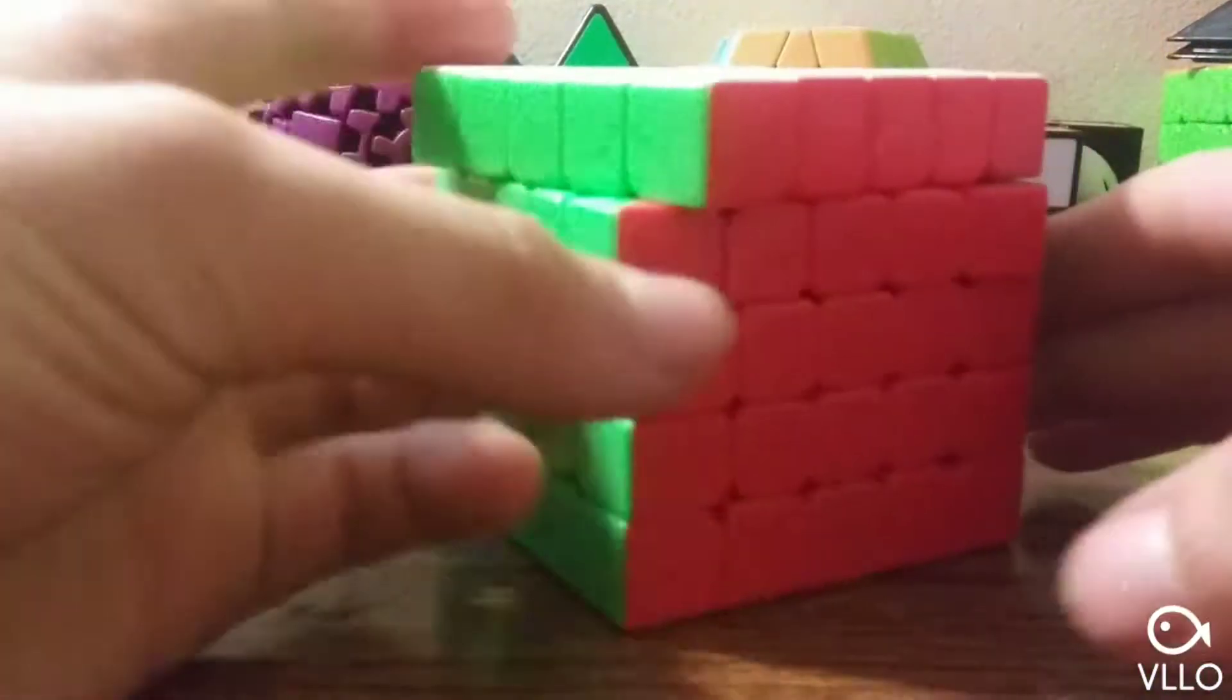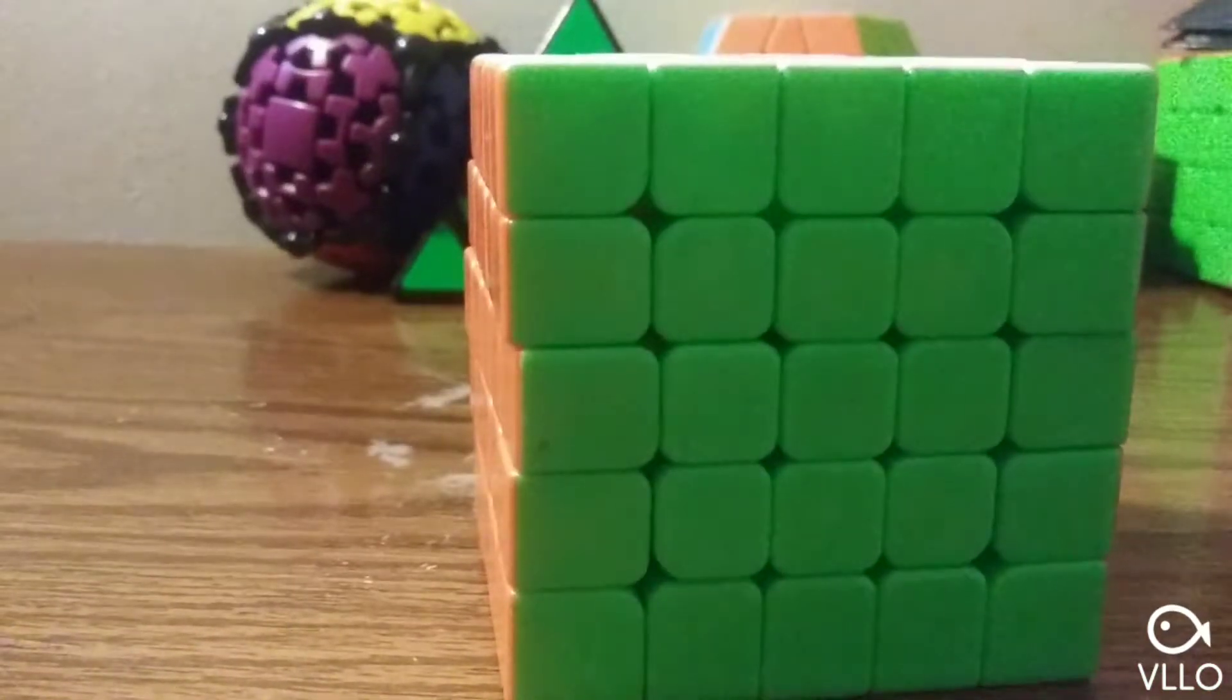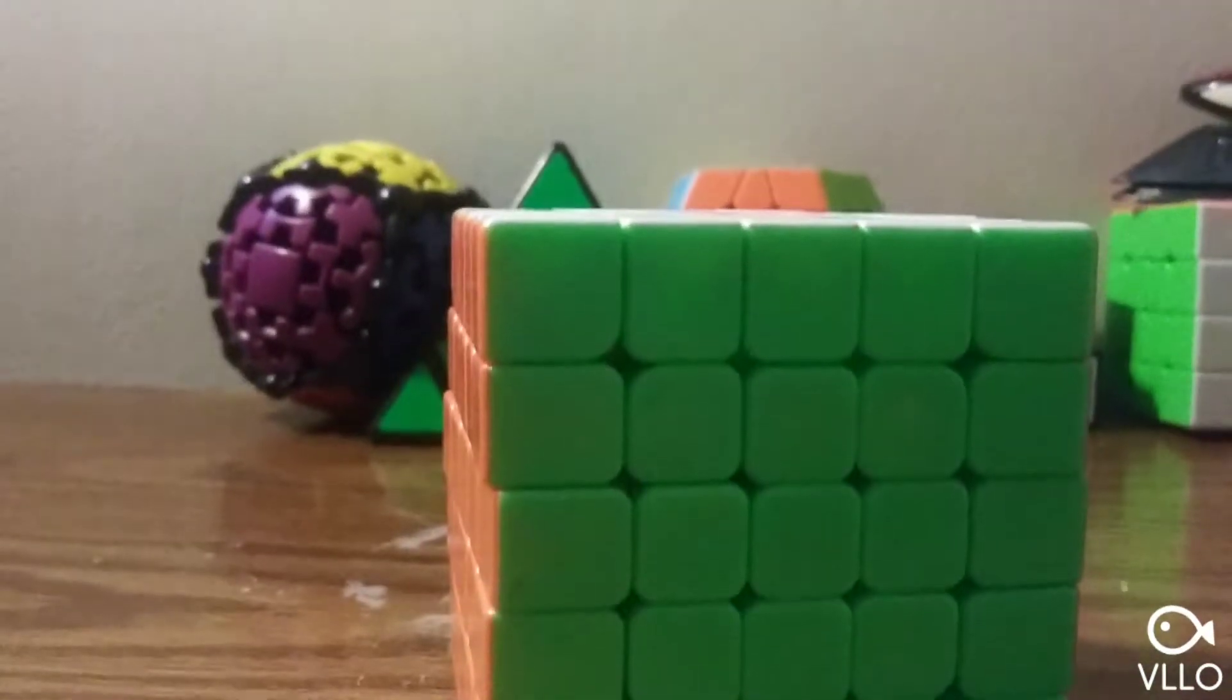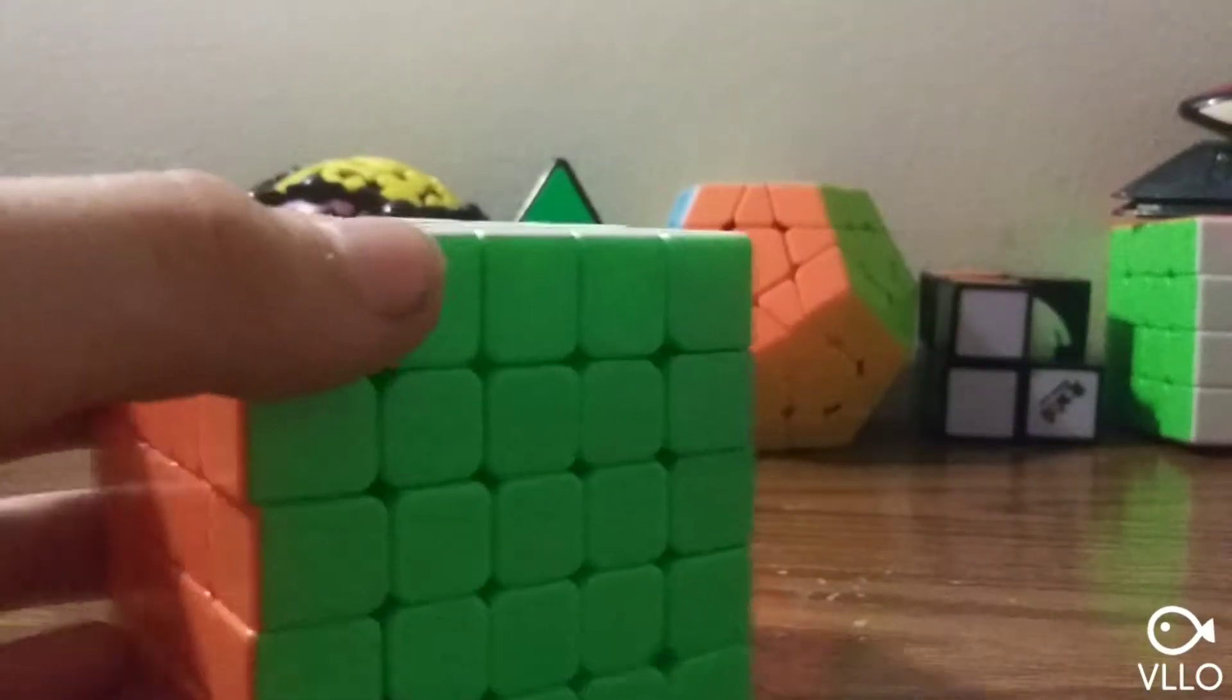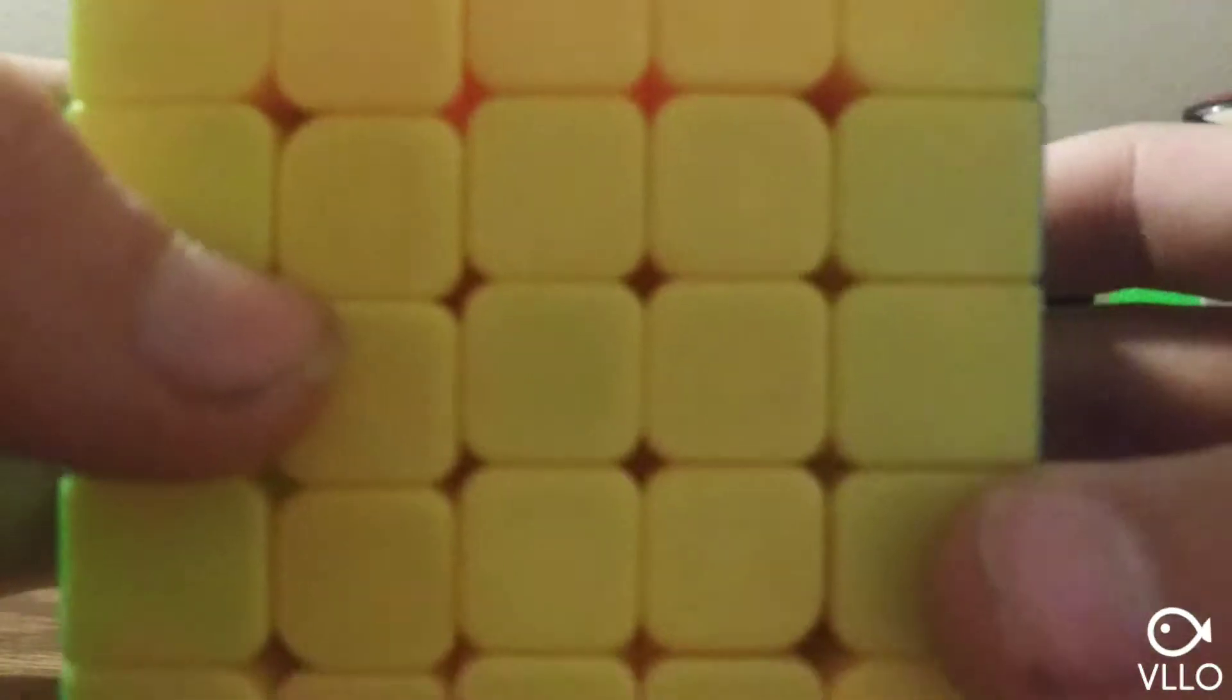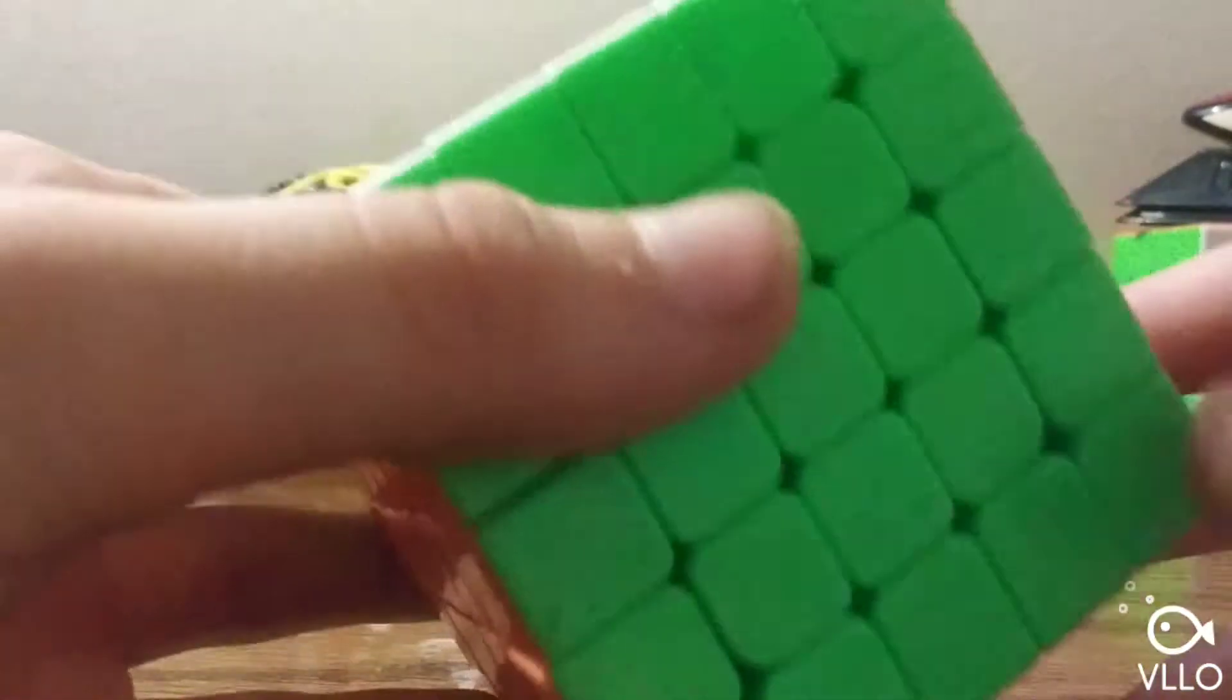And guys, I actually solved this thing. I need to do something right now... Okay, so I actually solved the five by five. White side, orange side, yellow side, red side, blue side, and green side. Yeah, I used J Perm's tutorial.